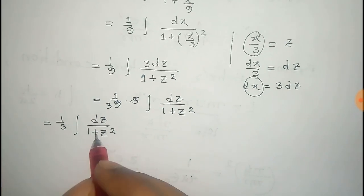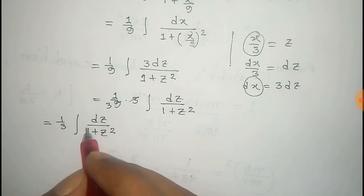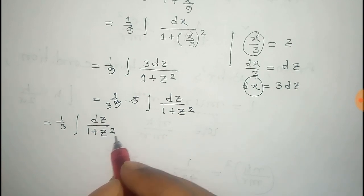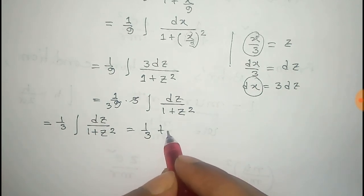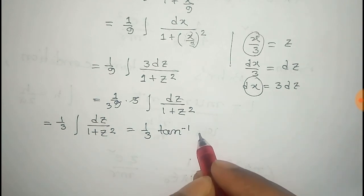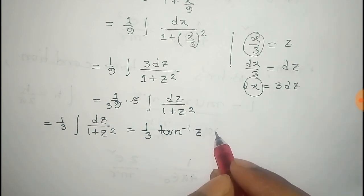Now the integral of dz by 1 plus z square is given by tan inverse z. So that is 1 third tan inverse z plus a constant c.